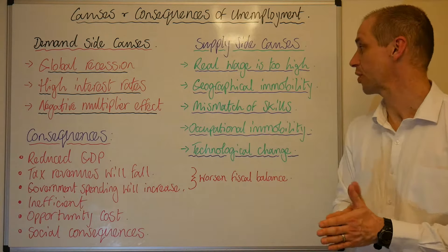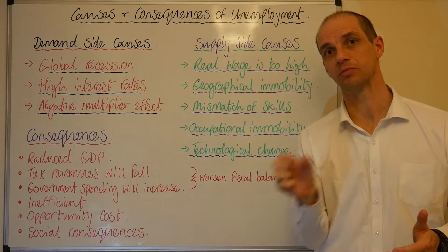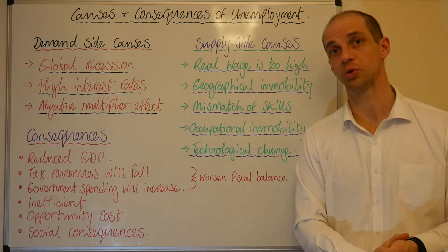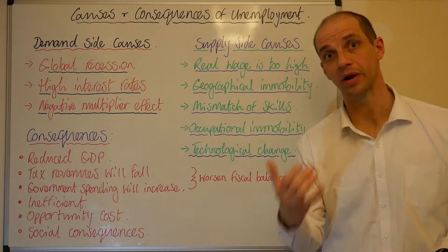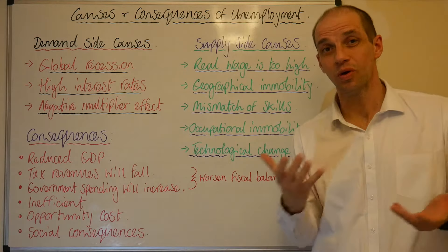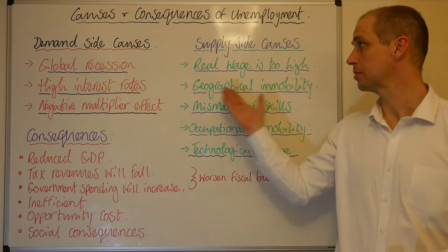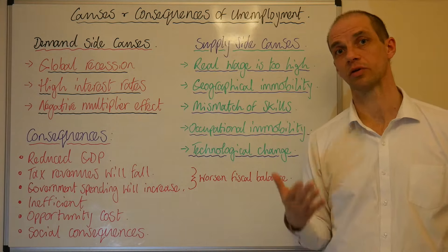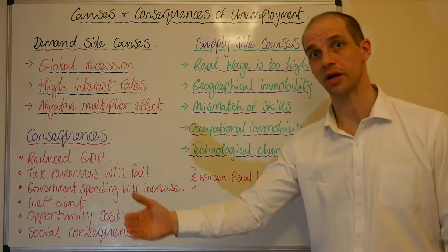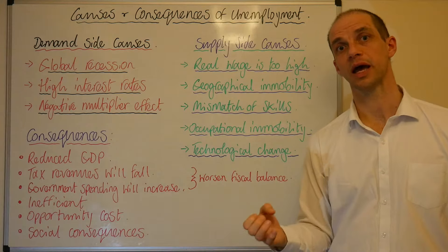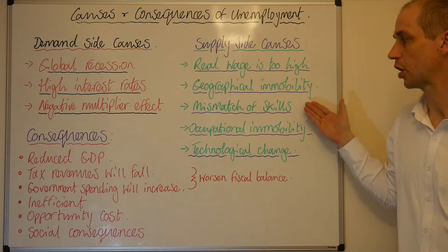When it comes to geographical immobility, it's really about how easily workers can move from one location to another. A lot of people advocate removing the stamp duty on buying a house, arguing that it would encourage labour mobility and improve geographical mobility, because upon selling and buying another house in another location, you are not having to pay a large tax bill on top of that house purchase.